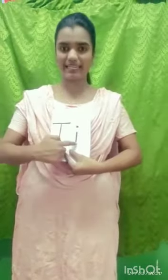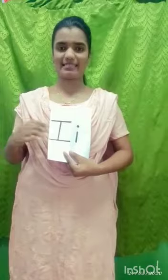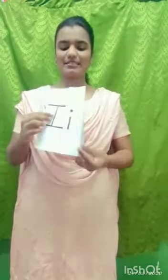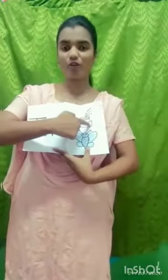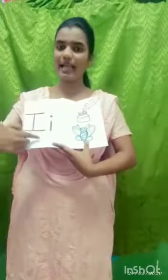Now we finish G and H, and the next letter is — no, no, it is I. This is the uppercase letter I and the lowercase letter I. The objects related to I are I for ink pot and I for insect. The phonic sound of I — what is the sound of I? The phonic sound is E.